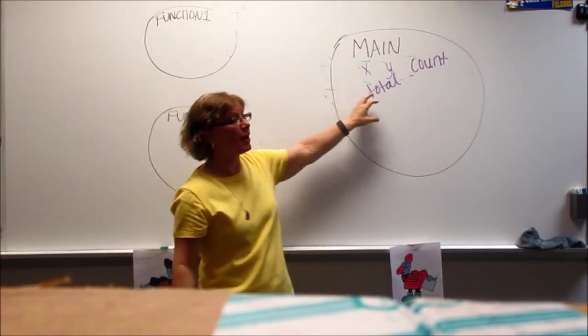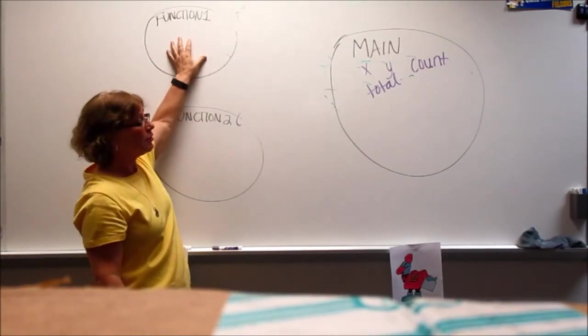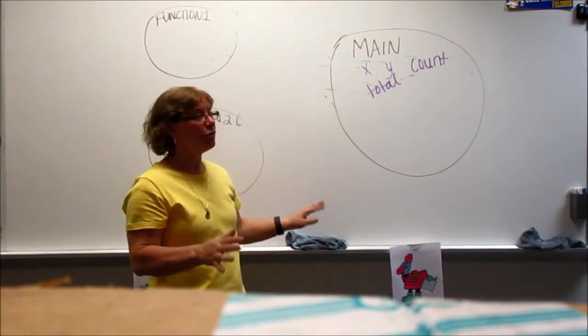So, the copy of that value got passed in, and then this variable disappeared because it was local. So, that's kind of some important information as you're working through things.